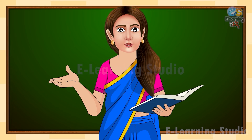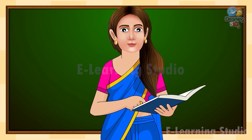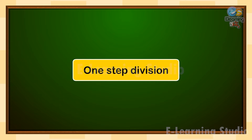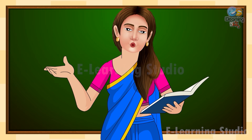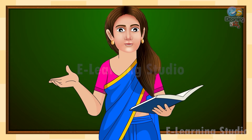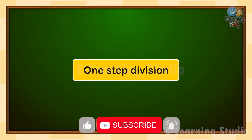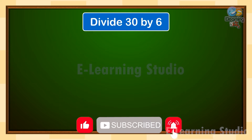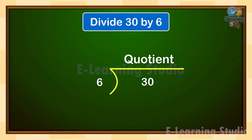Hope this is clear to you all. Thank you and happy learning! One Step Division. Hello children, welcome back. In today's video, we will learn a new concept which is one step division. Let us divide 30 by 6. First, put 30 in the dividend position and 6 in the divisor position.